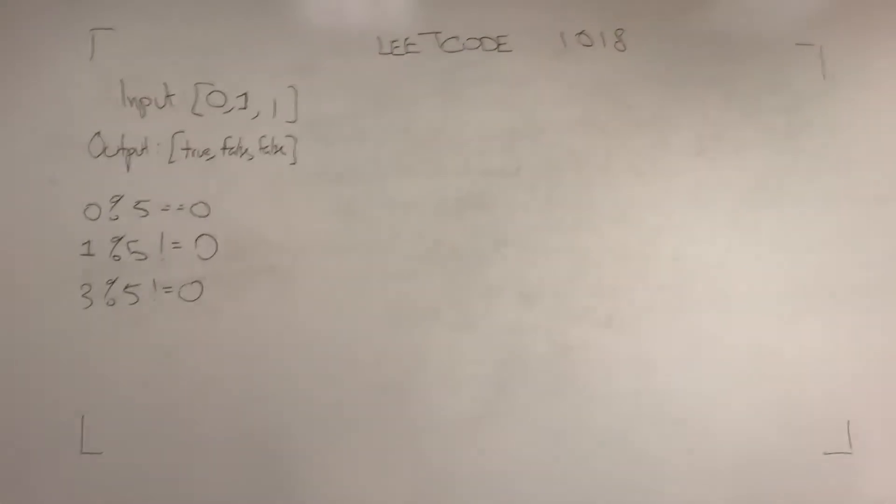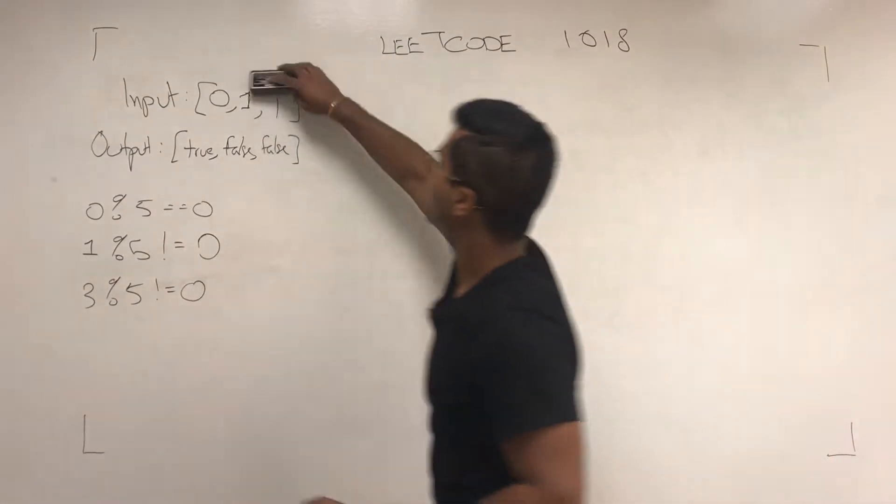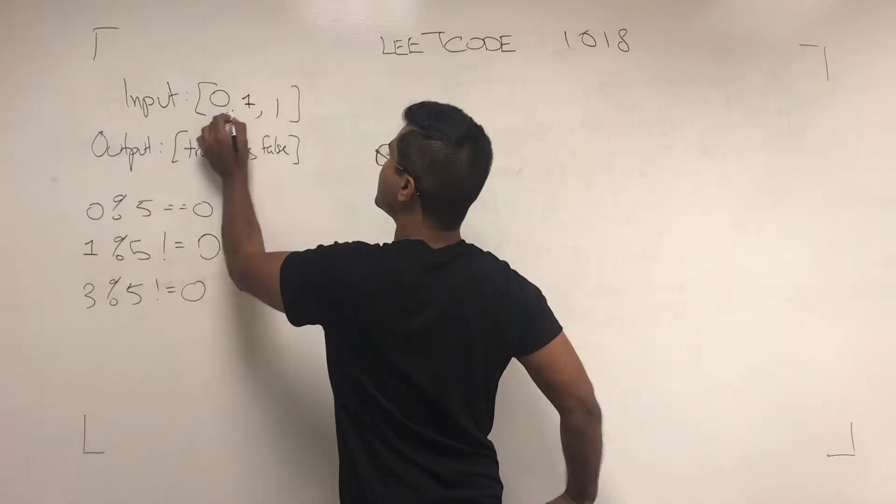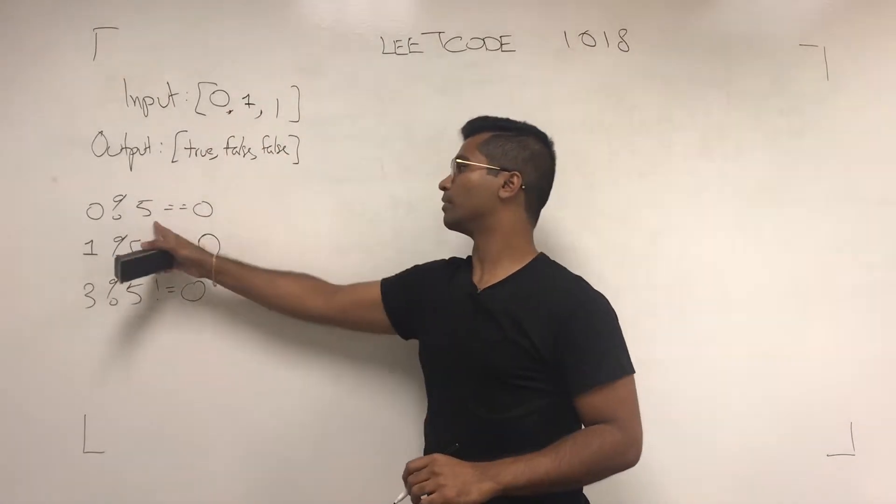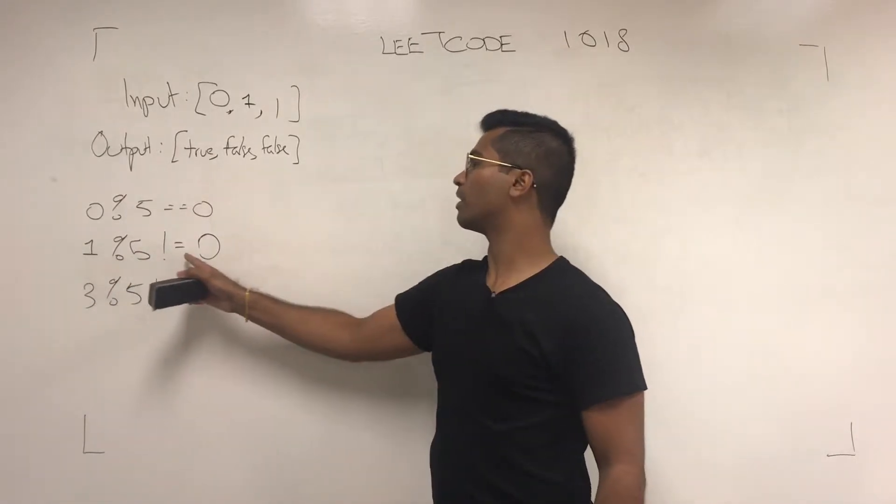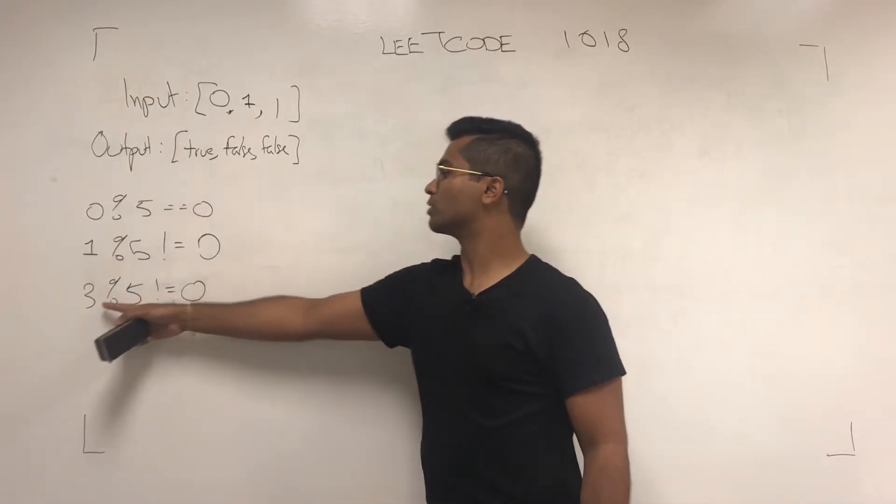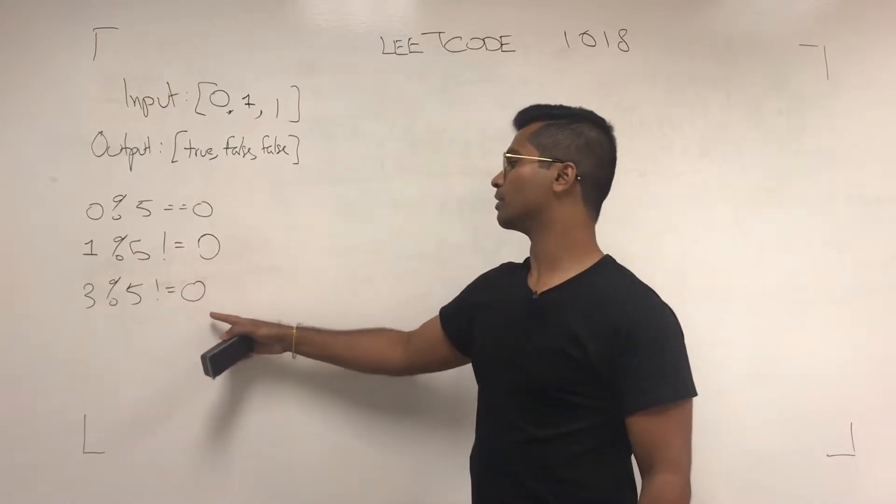Where's my eraser? So, is 0 divisible by 5? Yes, so we put true. Is 1 divisible by 5? No, we put false. Is 3 divisible by 5? No, we put false.